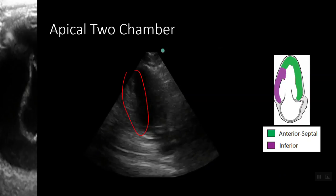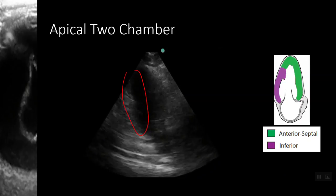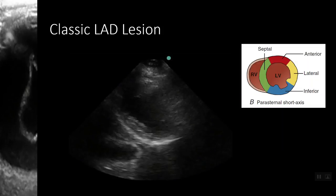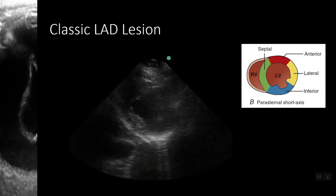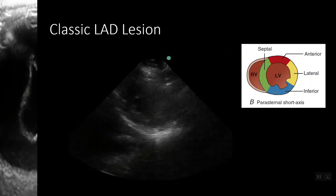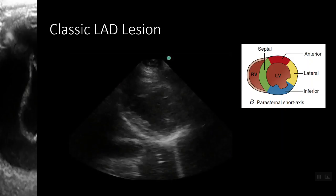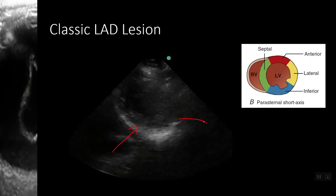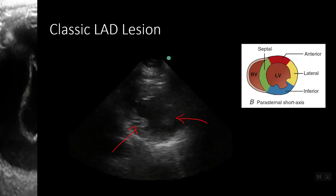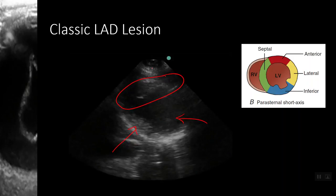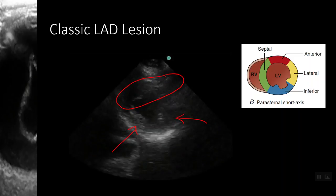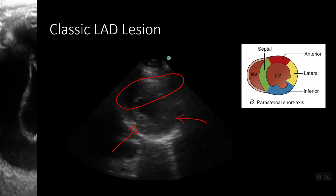Now let's get down to some positive findings. Let's start with our classic left anterior descending, or LAD, lesion. As we know, our LAD generally perfuses our anterior and septal walls. In this parasternal short axis, we notice good movement — myocardial excursion — in our inferoseptal region as well as our lateral region. However, when evaluating the anteroseptal region, we notice reduced movement. We get the impression the anteroseptal wall is just being pulled by the other walls, but not actually contracting.